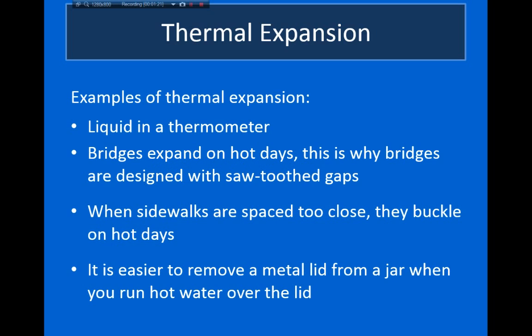Another common example is in very large structures such as bridges. If you've ever driven over a very large bridge, you've noticed these sawtooth metal sections. What these actually are are gaps inside the bridge — there are actually disconnected sections. The reason these gaps exist is so that on a hot day, when the bridge expands, it has room to expand so that the two ends of the bridge don't run into each other and buckle.